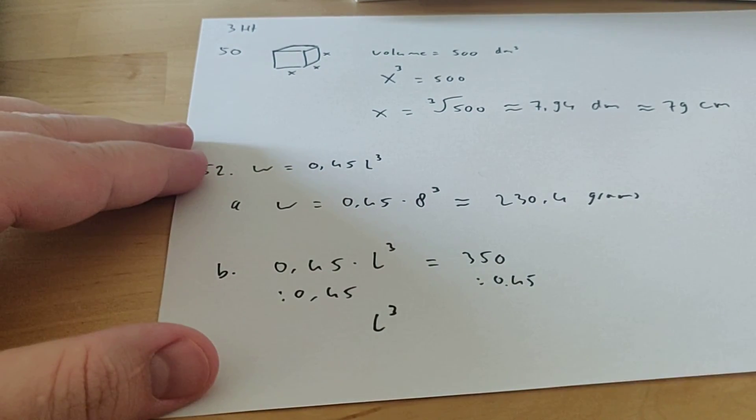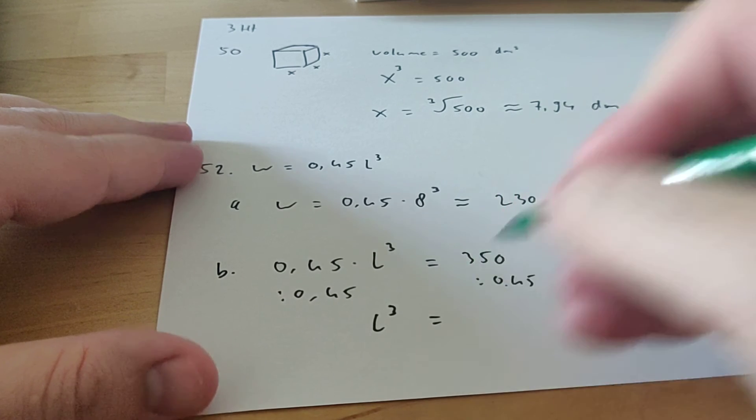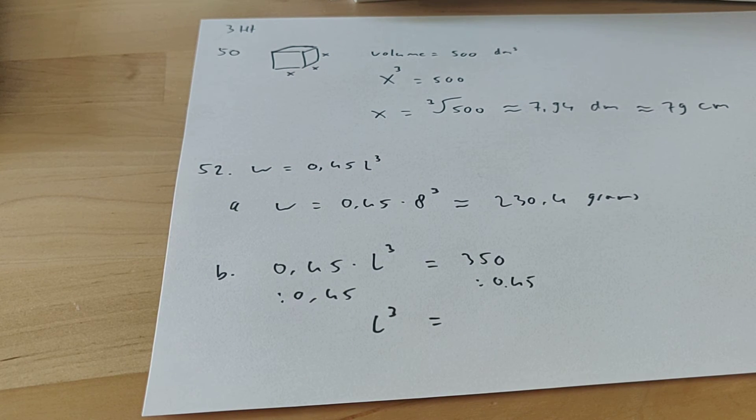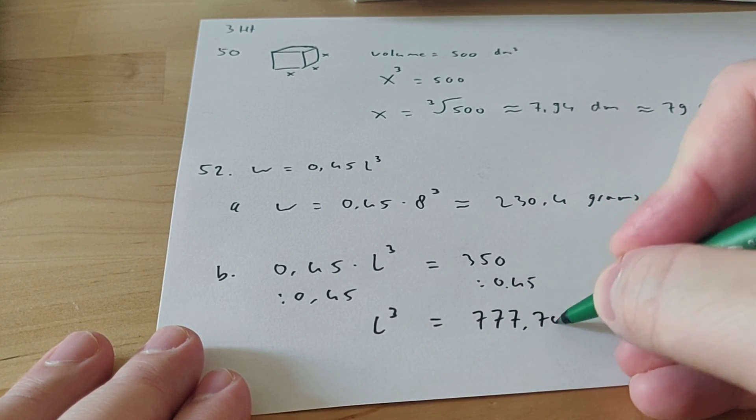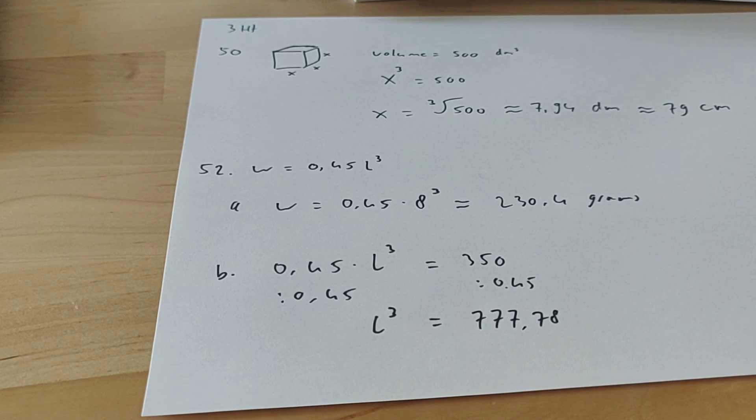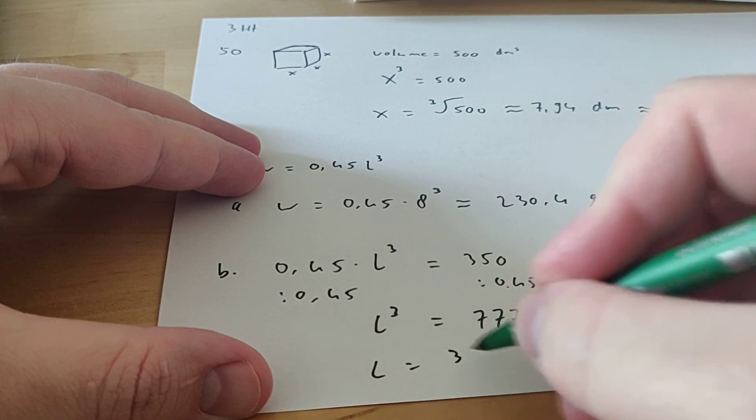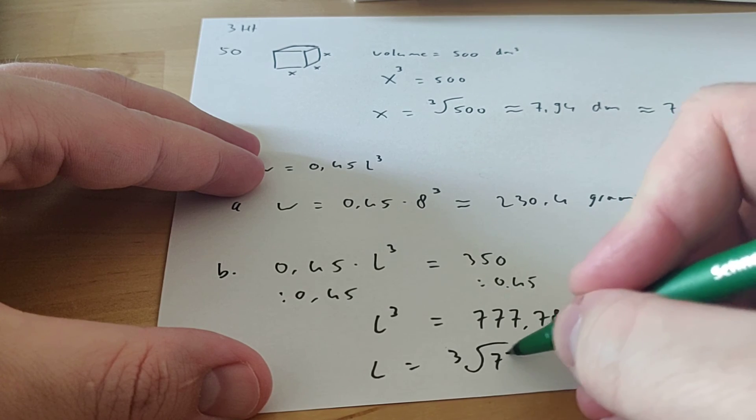Then you have L to the power of 3 equals, so let's see what 350 divided by 0.45 is. That's 777.78. So if you want to know what L is, you have to take the third power root of that number.